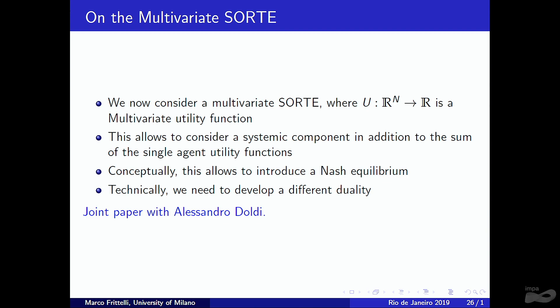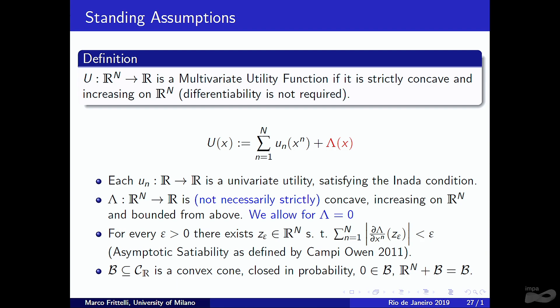We now generalize to a multivariate utility function, which allows a systemic component in addition to the sum of single utilities. This also allows introducing a Nash equilibrium concept. The proofs are technically quite different as they require exploiting a different duality structure.